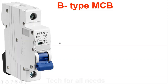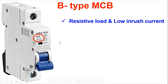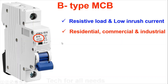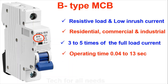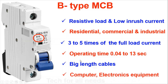B type MCB is used for resistive loads with low inrush current — residential, commercial, and industrial applications. The magnetic trip range is 3 to 5 times full load current, with an operating time of 0.04 to 13 seconds. It is suitable for the length of cable protection.